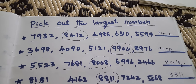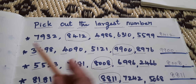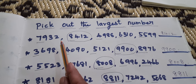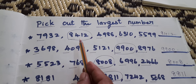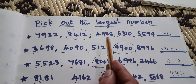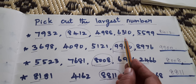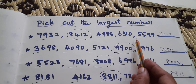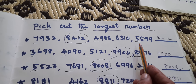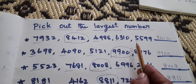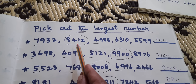Pick out the largest number. 7932, 8412, 4988, 6310, 5599. Which is the biggest number? Biggest means largest number. 8412.